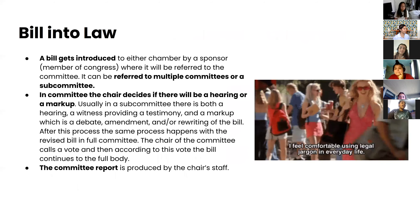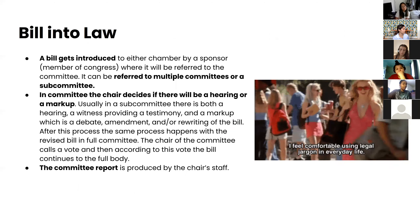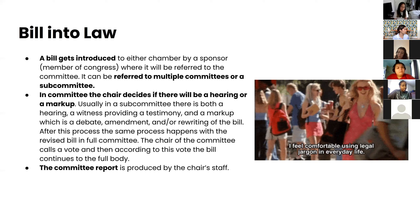Now I'll talk about how a bill becomes a law at the federal level. A bill gets introduced to either chamber — the Senate or the House of Representatives — by a sponsor who is a member of Congress. It's then referred to a committee, or multiple committees or subcommittees. A committee is a group of people who specialize in one area. The chair decides if there will be a hearing or a markup. A hearing involves a witness providing testimony, and a markup is a debate, amendment, or rewriting of the bill.